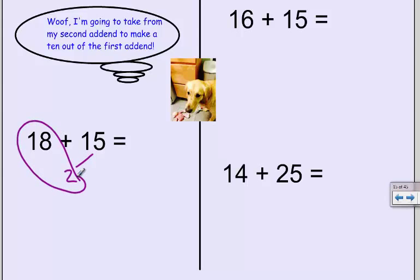I know 2 and 8 make 10. So, 18 and 2 would make 20. Now, I've got to see how many are left. Well, if I take 2 away from 15, I can count backwards. 14, 13. So, I have 13 left.